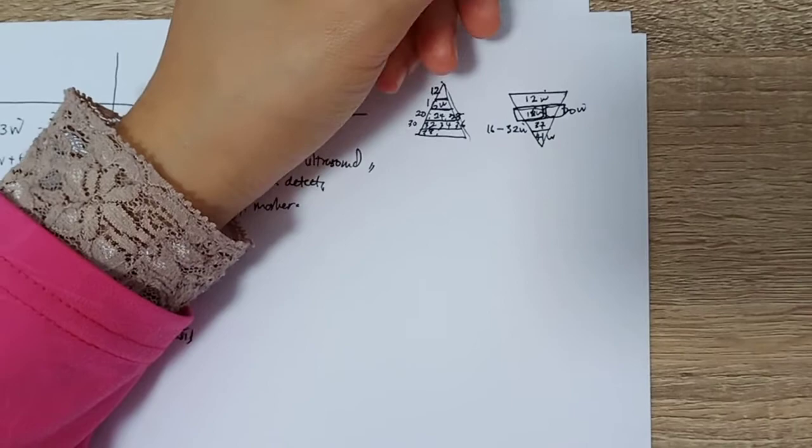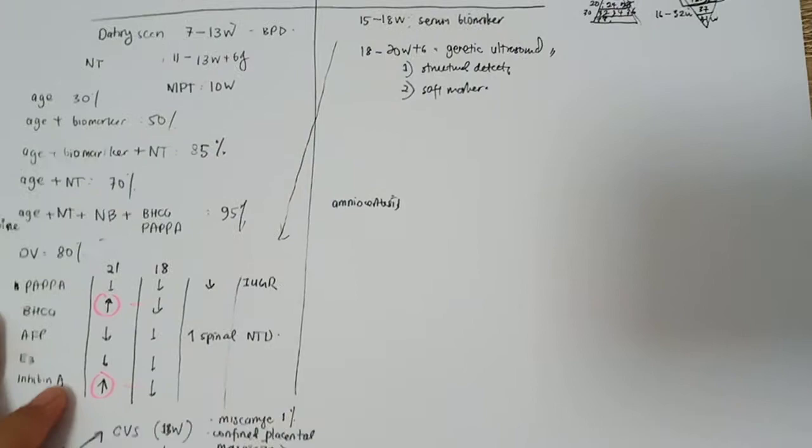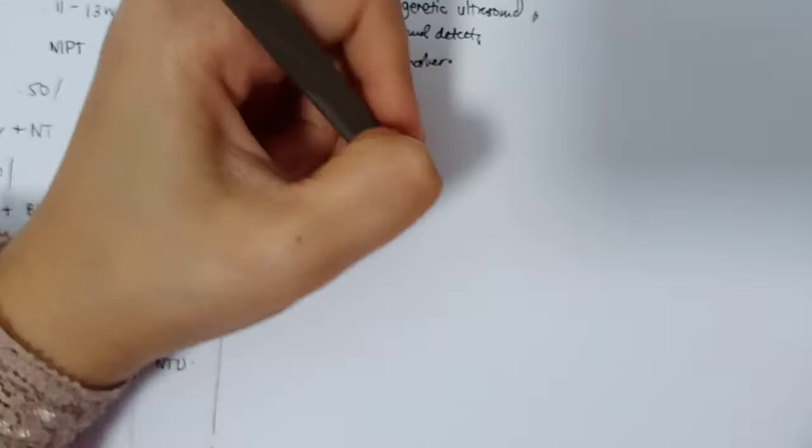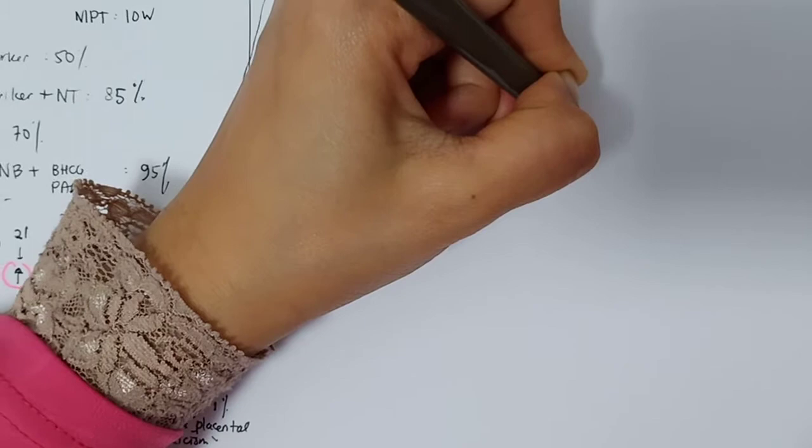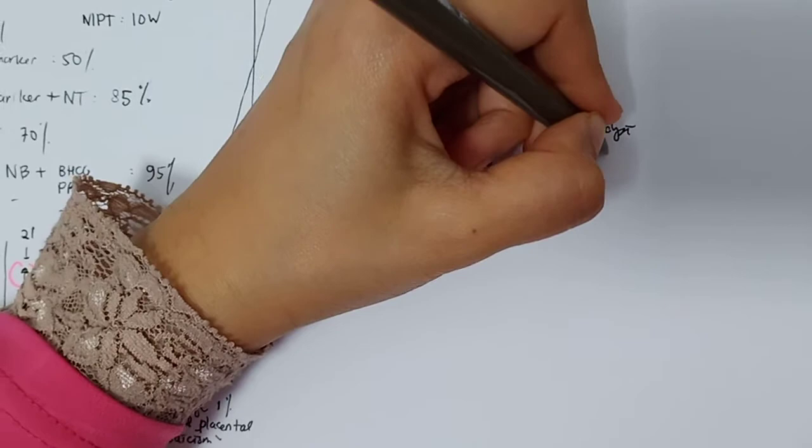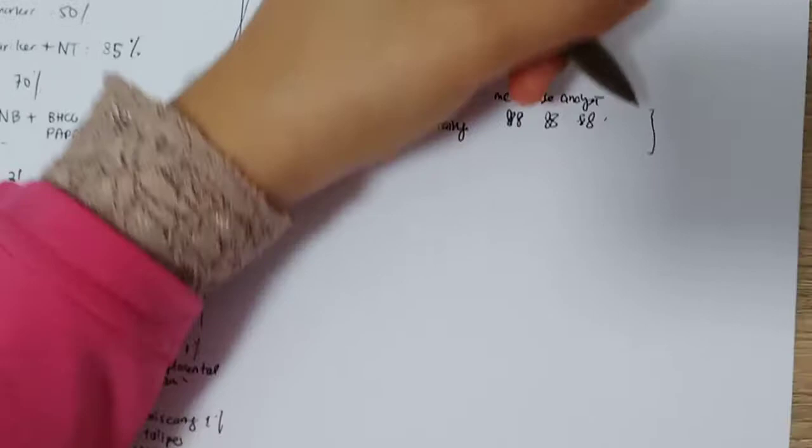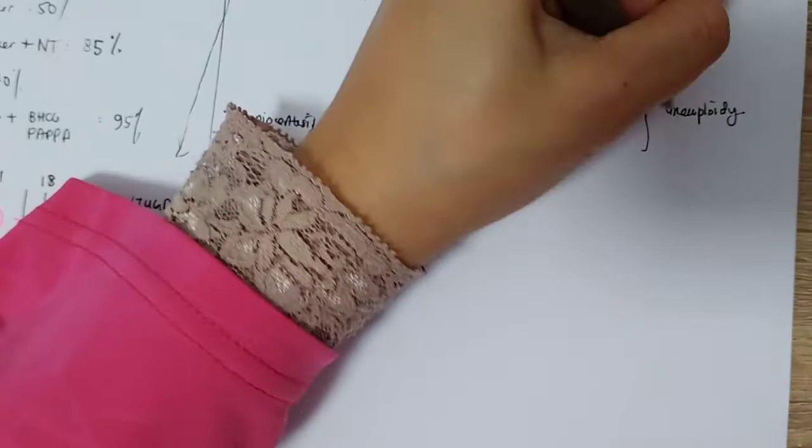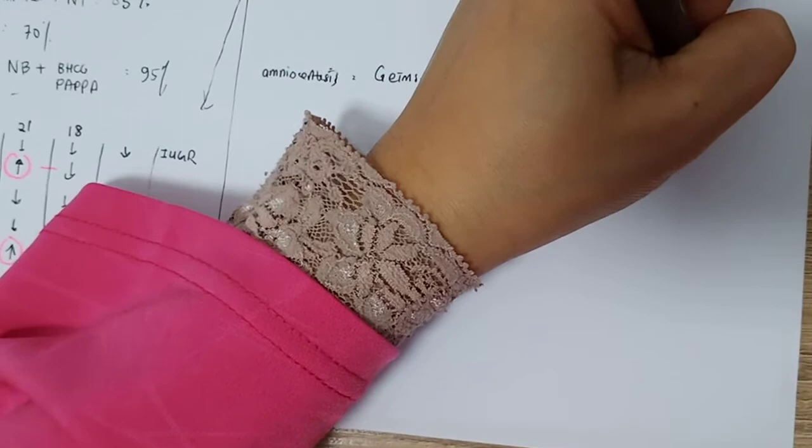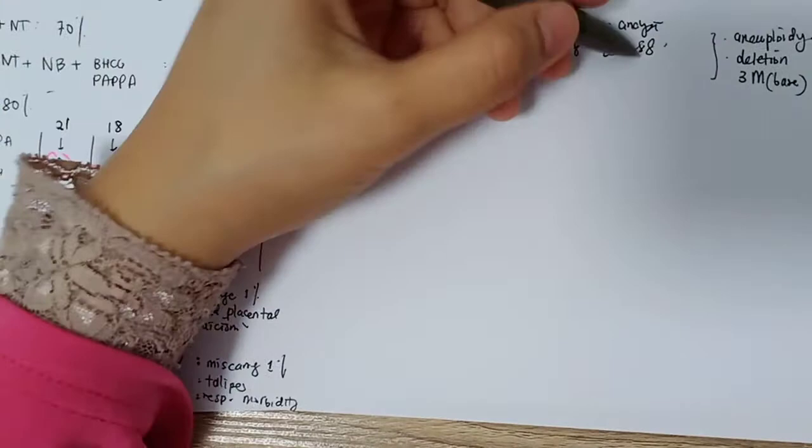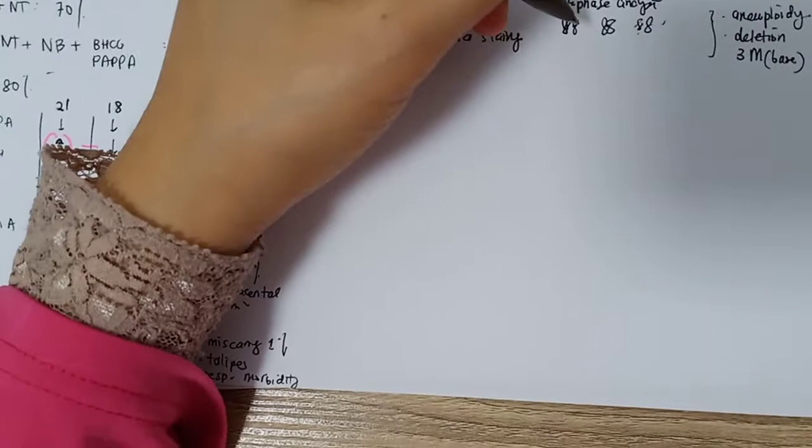I want to talk about what amniocentesis can do. Previously we used Giemsa staining, a standard karyotyping whereby after metaphase analysis of the chromosome, we can see a standard karyotype. This can detect aneuploidy and deletions up to 3 megabase nucleotide base. Due to this limitation, for example, you have a patient with a normal karyotype, but there is a microdeletion.